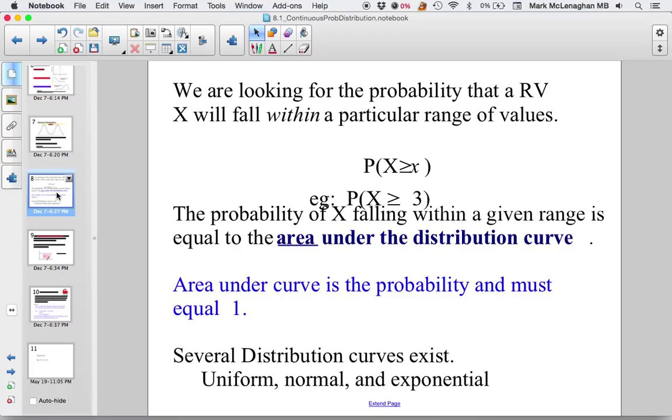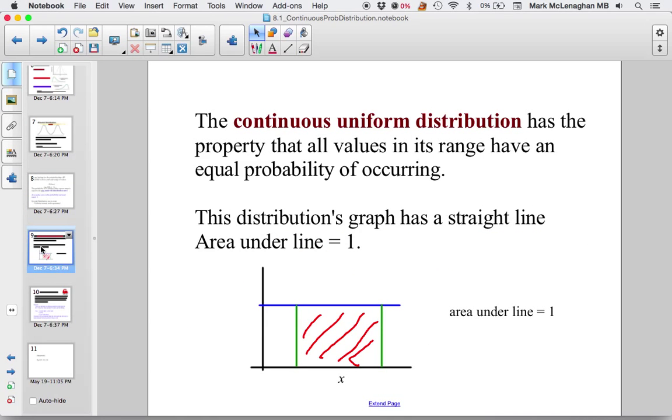Like I said, there's several types of distribution curves. We'll be looking at uniform, normal, and exponential. The first one is continuous uniform distribution.